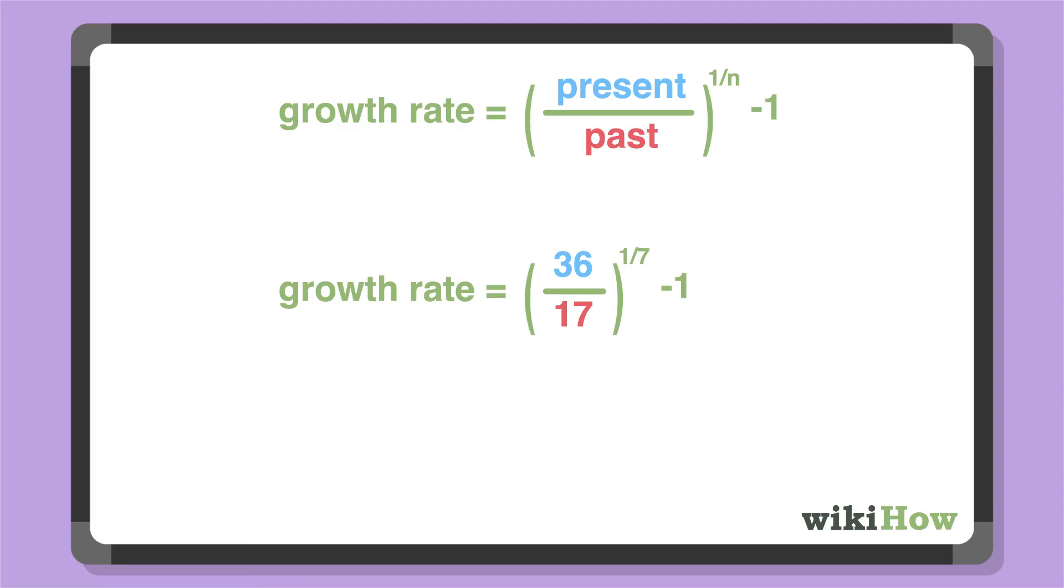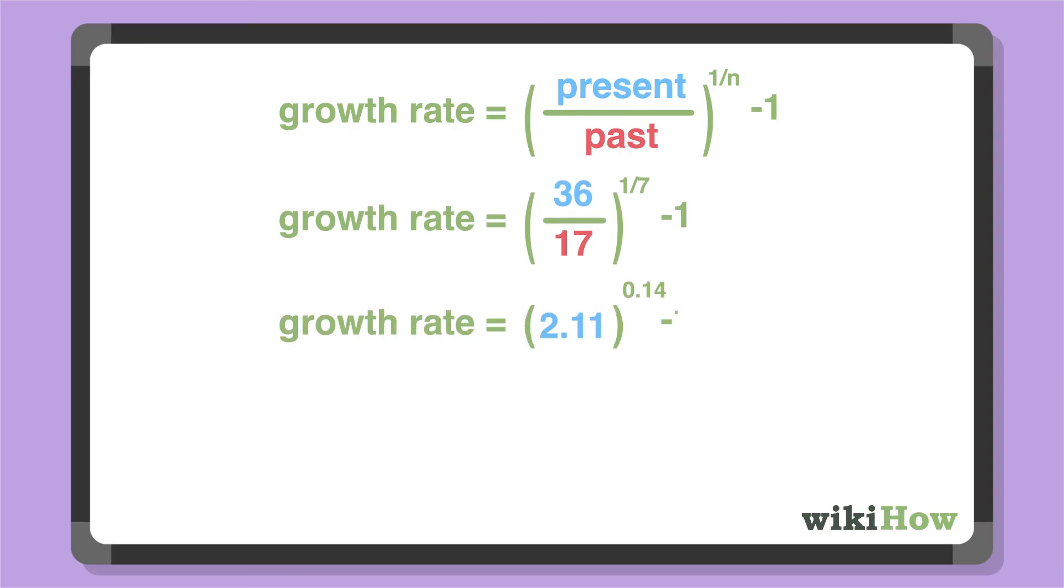use the formula growth rate, which equals 36 over 17 to the 1 over 7 minus 1, which equals approximately 0.11 or 11%.